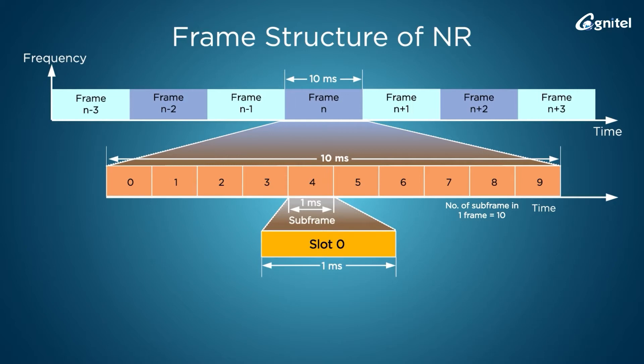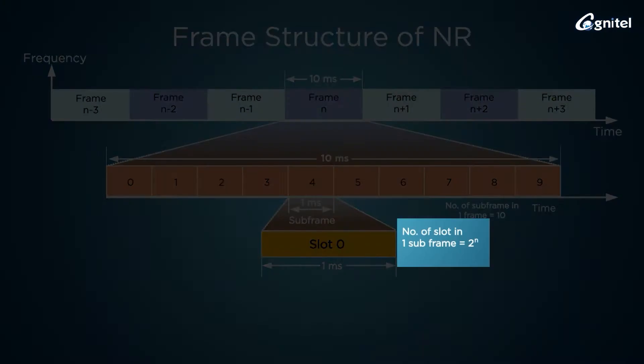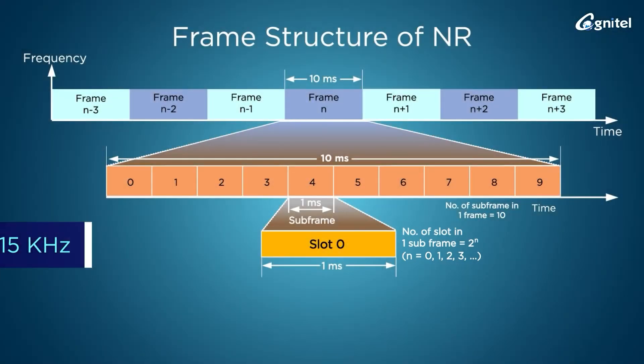The number of slots can be calculated using a simple formula: 2 raised to the power n, where n is an integer starting from zero. For 15 kilohertz subcarrier spacing, the value of n is zero.